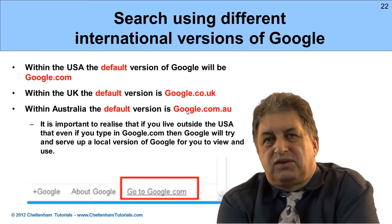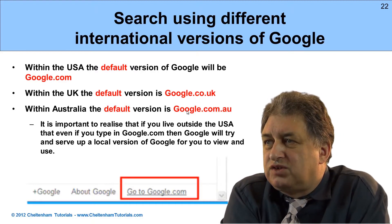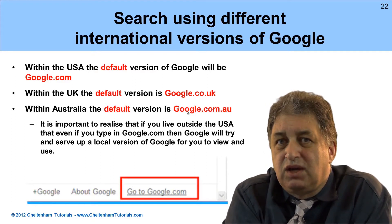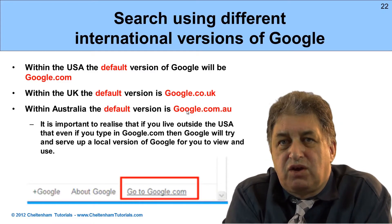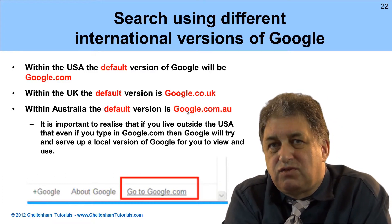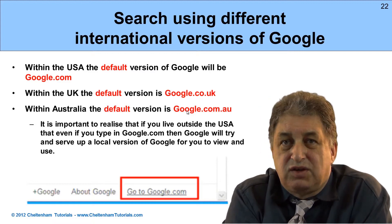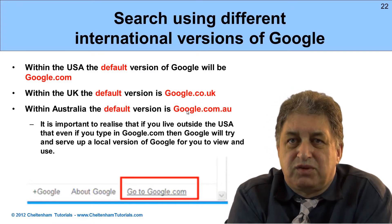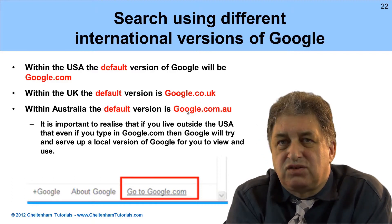It's important to realize that when people search in different parts of the world, they use different versions of Google. Within Australia the default is google.com.au, in the United States it's google.com, and in the UK it's google.co.uk. If you're aiming for local searches from an international point of view, you need to load up the relevant country's version of Google to see what results people get there.